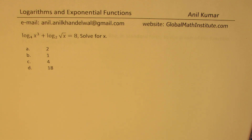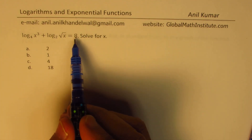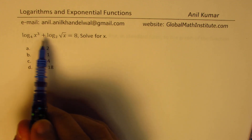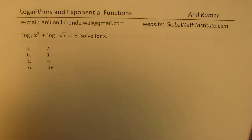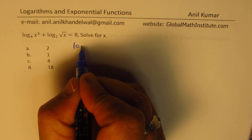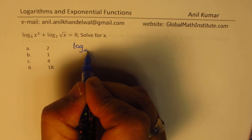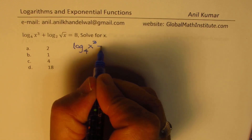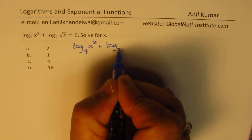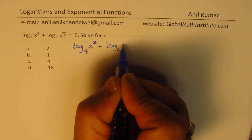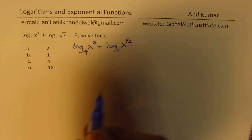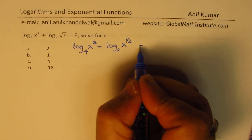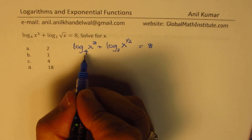Since 8 can be written with a base of 2, it's a good idea to change the base. We'll solve by the change of base formula. We have log to the base 4 of x cubed, plus log to the base 2 of x to the power of one-half, equals 8.